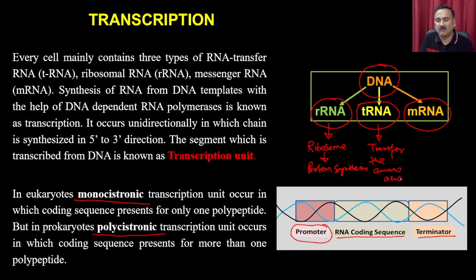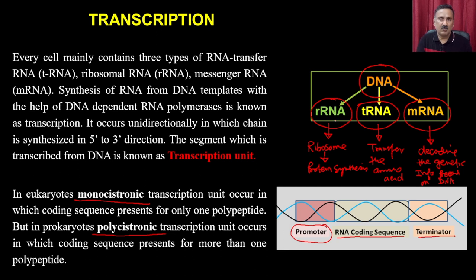Transfer RNA transfers amino acids, since proteins are made up of different types of amino acids. Messenger RNA is responsible for decoding the genetic information present on DNA. These three RNA molecules — rRNA, tRNA, and mRNA — are produced from DNA by a process called transcription. In the previous lecture, we discussed transcription in prokaryotes, covering initiation, elongation, and termination.